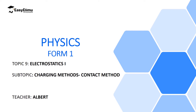Welcome to ECL EMU Learning Simplified and welcome to this lesson. In the previous lesson we discussed how we can charge a material positively by induction and negatively by induction. What we realized is that when you charge a material by induction, it will acquire opposite charges to the charging rod. If you want to charge a material positively by induction, you use a negatively charged rod, and if you want to charge it negatively by induction, you use a positively charged rod.